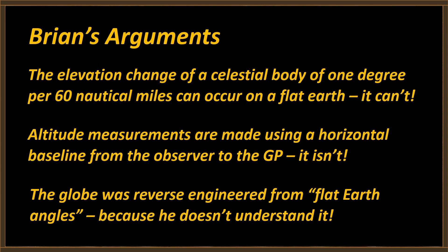Brian is going to present a number of arguments about the use of a sextant on a flat earth. He's going to tell us that the elevation change of a celestial body of one degree per 60 nautical miles as we move away from the GP of that body can actually occur on a flat earth. Of course it can't — we're going to show Brian why this is geometrically and trigonometrically impossible.